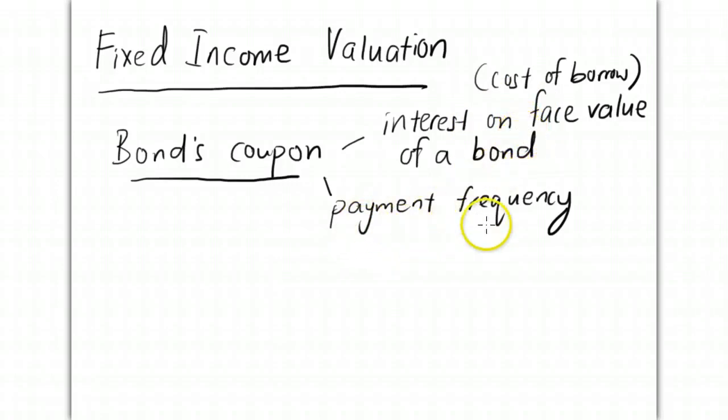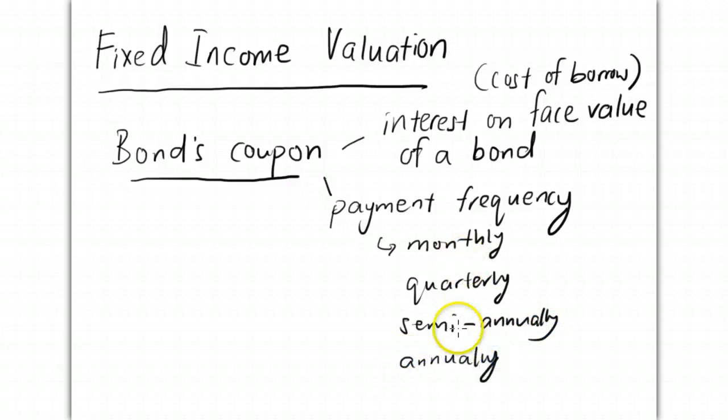There are several payment frequencies of coupon bonds: monthly, quarterly, semi-annually (which is the most common), annually, and bi-monthly are among the most common.